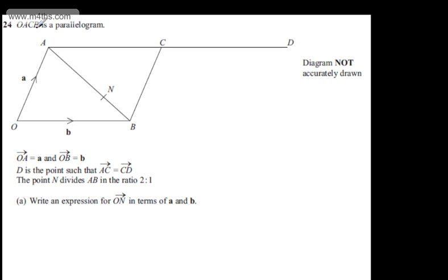This is question number 24. We're told OACB is a parallelogram. The vector OA is equal to a and the vector OB is equal to b. D is the point such that the vector AC is equal to the vector CD. The point N divides AB in the ratio 2 to 1.